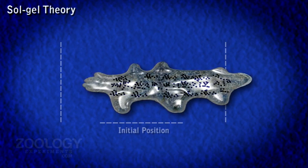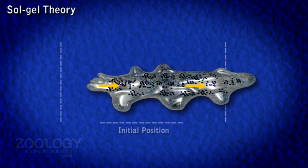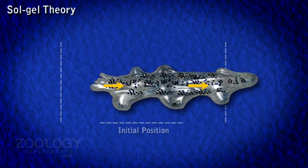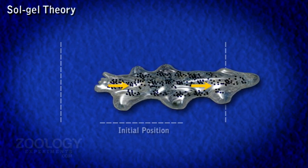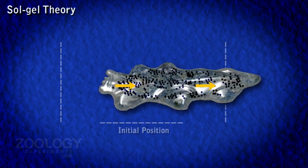Second, there is a local partial liquefaction of the plasma gel at the interior end. This causes the central plasma sol, under tension, to flow forward and force the plasma gel for the beginning of the pseudopodium.